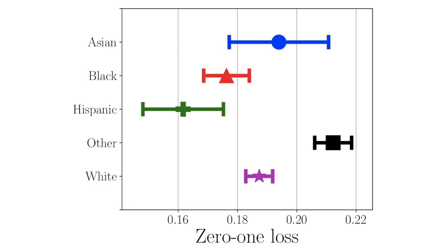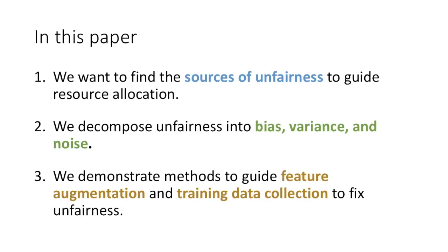Why might a classifier, and especially my classifier, be discriminatory? In this paper, we seek to understand the sources of unfairness in an algorithm. We present a decomposition into bias, variance, and noise, and we demonstrate the effectiveness of methods to guide feature augmentation and training data collection.